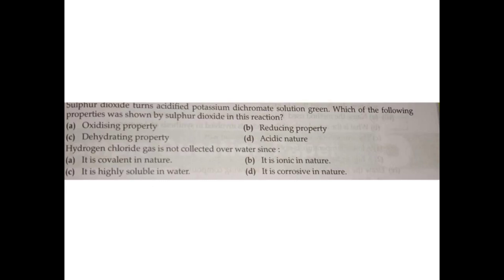Question number nine: sulfur dioxide turns acidified potassium dichromate solution green. Which of the following properties is shown by sulfur dioxide in this reaction? A) oxidizing property, B) reducing property, C) dehydrating property, D) acidic property. The correct answer is option B: reducing property.